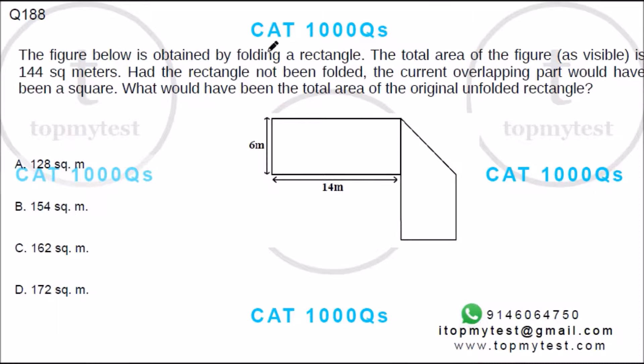Right, this one says the figure below is obtained by folding a rectangle. The total area of the figure as visible is 144 square meters. Had the rectangle not been folded, the current overlapping part would have been a square.